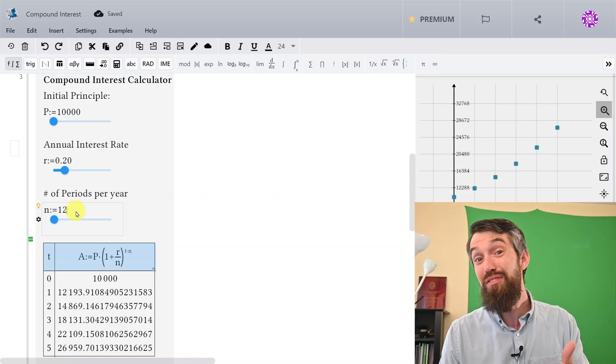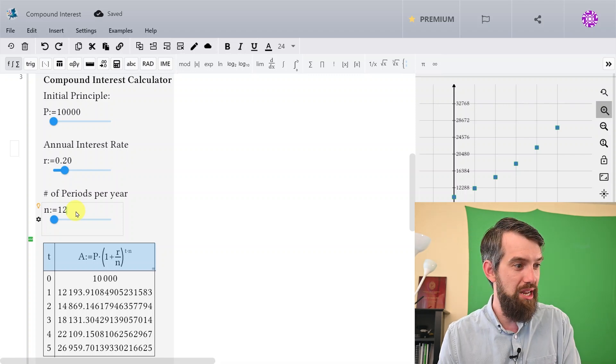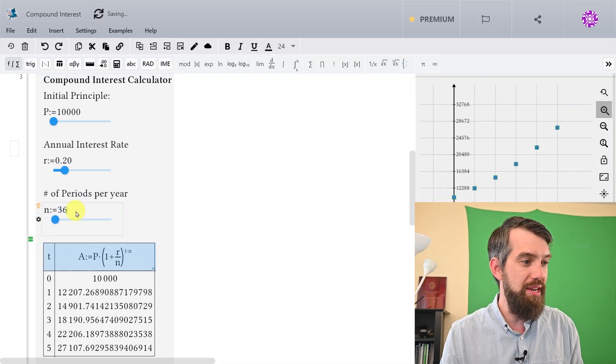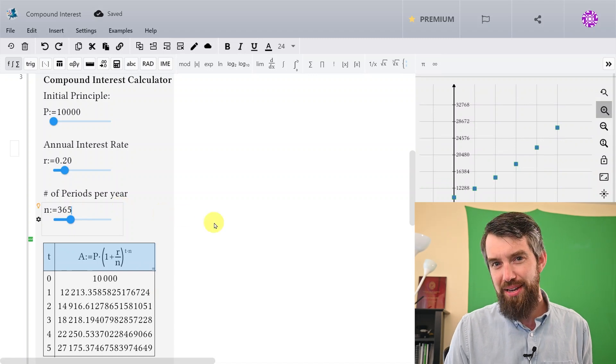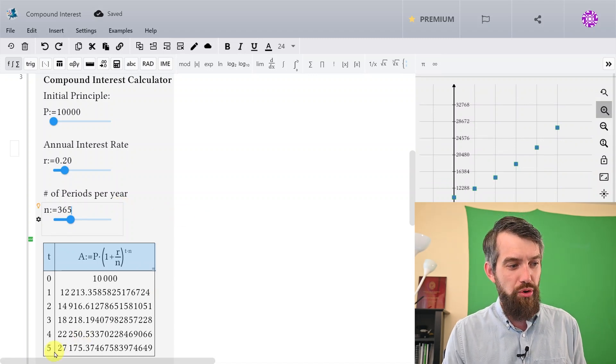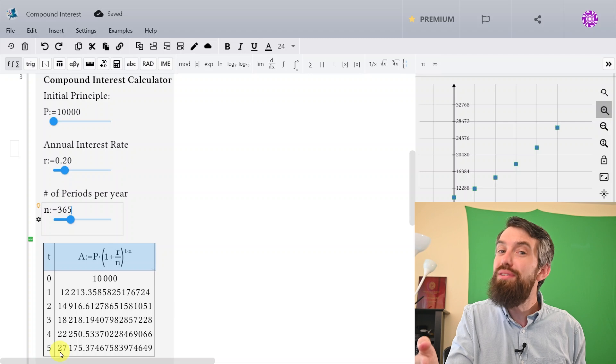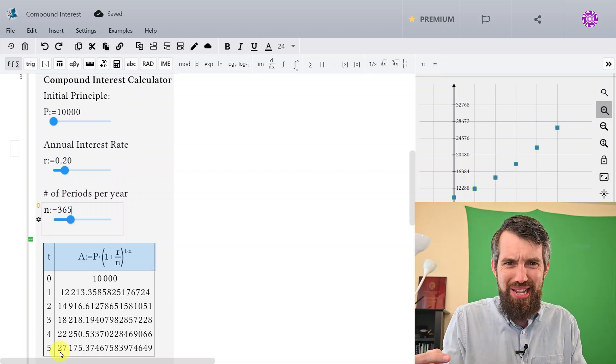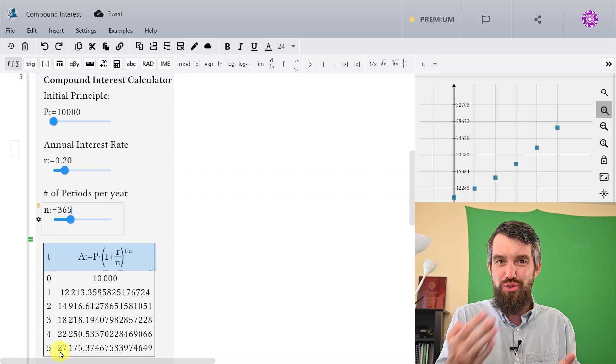Well, how bad could this be? Like, for example, what if instead of monthly, you did it daily? So instead of 12, you go 365 here. And actually, this has increased. It's a little more than $27,000, not a little less than $27,000, but not actually as crazy an increase from 1 to 12.